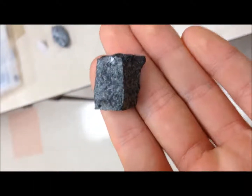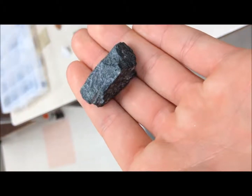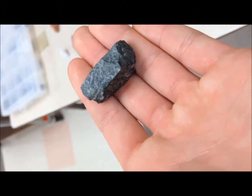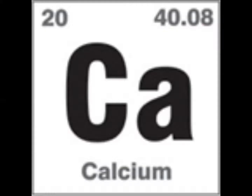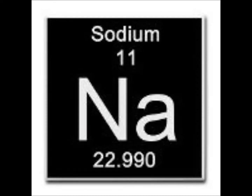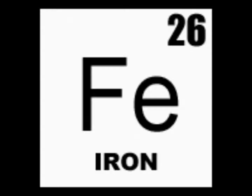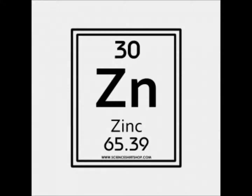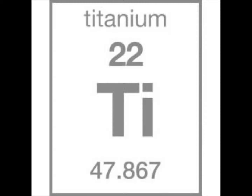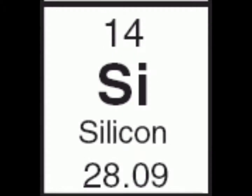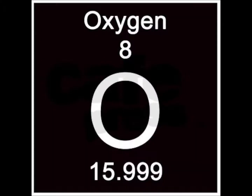Augite comes in all colors, shapes, and sizes, being the most widespread member of the pyroxene group. It is composed of calcium or sodium in combination with magnesium, iron, aluminum, zinc, manganese, or titanium, in combination with silicon or aluminum, in combination with oxygen.